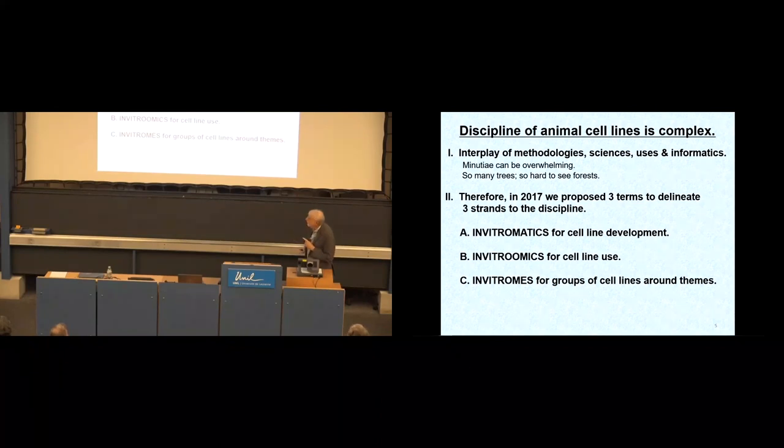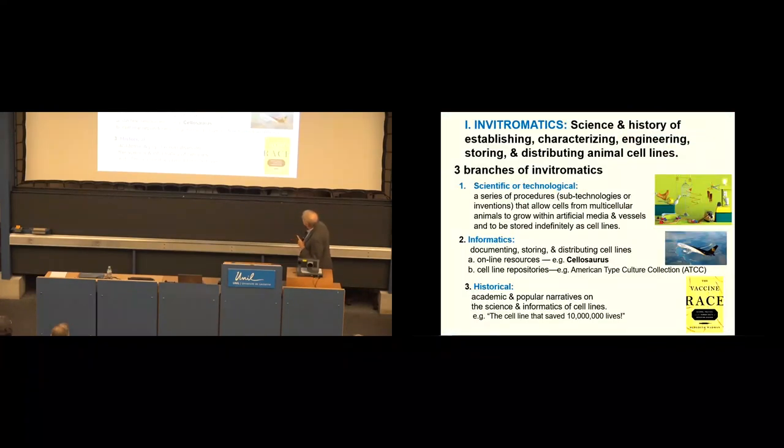So I argue that the discipline of animal cell lines is complex. I think from everything I've heard today, it is indeed complex. And the minutiae can be overwhelming. So I suggested in 2017, proposed three new terms. I like making terms. So invitromatics is the discipline that describes cell line development. Invitromics is for cell line use. And invitrome is for grouping of cell lines around themes, which is going to be most of my talk.